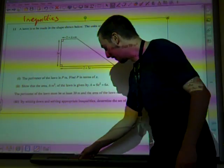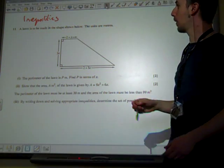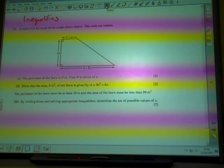Question 11 is about inequalities. A lawn is to be made in the shape shown below. The units are in meters.